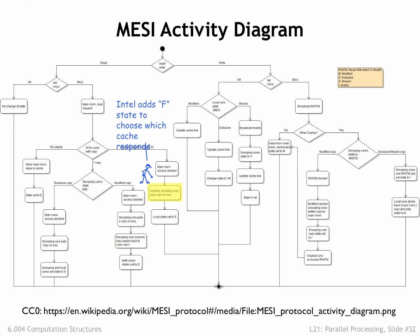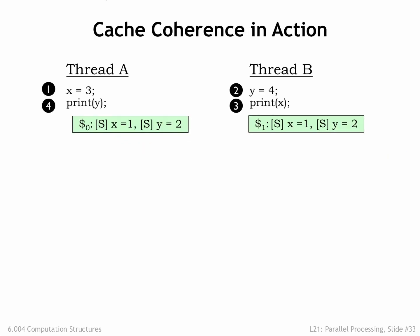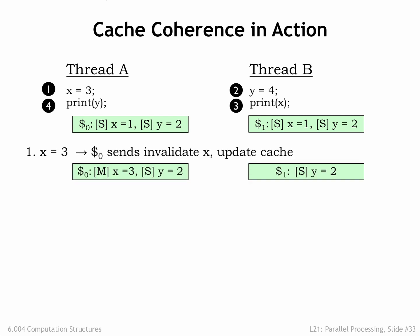Let's try the MESI cache coherence protocol on our earlier example. Here are our two threads and their local cache states, indicating that the values of locations X and Y are shared by both caches. Let's see what happens when the operations happen in the order 1 through 4 shown here. First, thread A changes X to 3. Since this location is marked as shared in the local cache, the cache for core 0 issues an invalidate transaction for location X to the other caches, giving it exclusive access to location X, which it changes to have the value 3. At the end of this step, the cache for core 1 no longer has a copy of the value for location X.